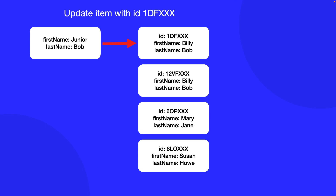Going back to our contact book example, we now have our list and items are uniquely identified based on their ids within the model. If we want to change the name of a person, all we need to do is find the item with the specific id and SwiftUI knows exactly which object to change. For example, we tell the model to update the item with ID 1DFXXX, so it knows to update that specific Billy and change their first name to Junior, not the second Billy.